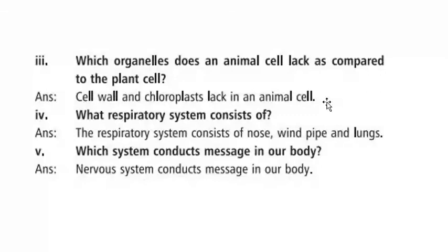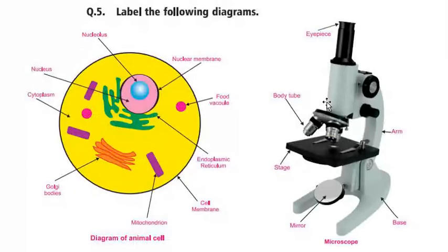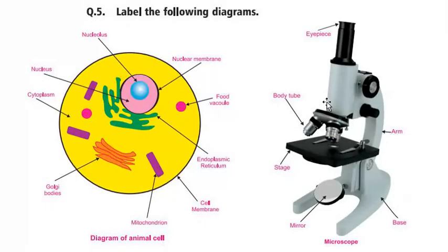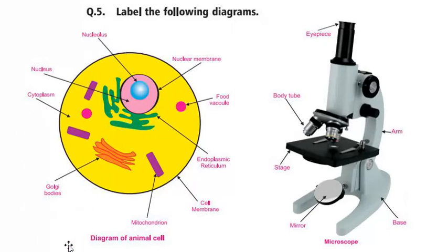Now this is question number five — the diagram section. The diagram is from the textbook side page. We will conduct the entire research from that page. This is the diagram for animal cells. Draw it in bold writing with a pencil.